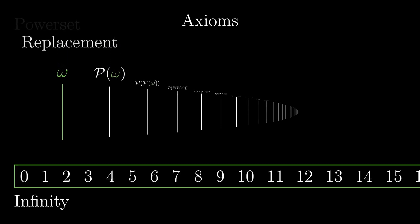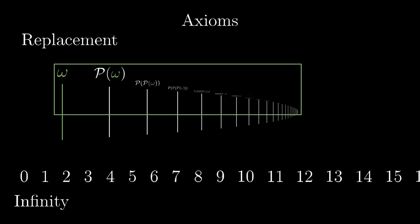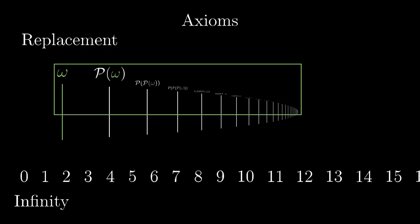After that we use the axiom of replacement to pack all the results into a single set, and we finish it with the axiom of union to put all the elements into a single set bigger than all the previous sets.